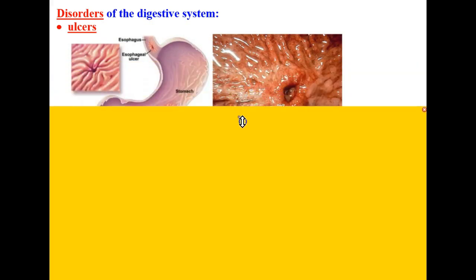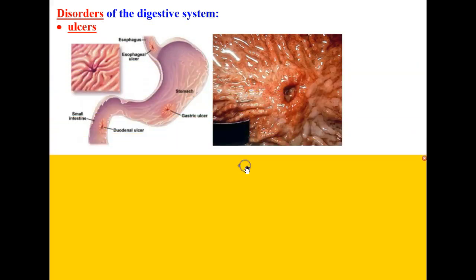Next let's take a look at four disorders of the digestive system. We're going to start off with talking about the most popular one you're most familiar with, which is ulcers. An ulcer is a hole.